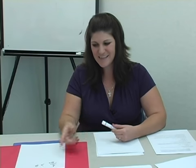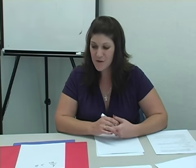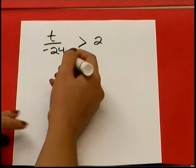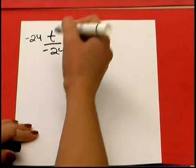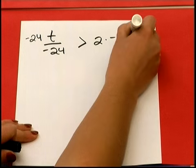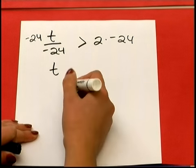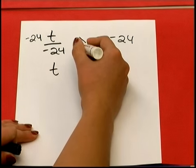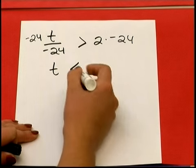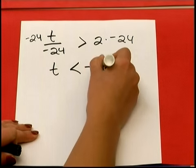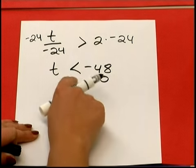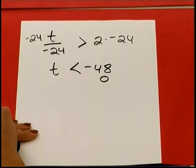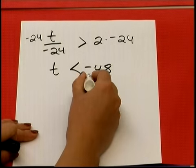Now to solve a division inequality: T divided by negative 24 is greater than 2. To solve, I use the inverse operation — instead of dividing by negative 24, I multiply by negative 24 on both sides. I'm left with T. Watch — it's a negative integer, so remember we have to reverse the sign. In this case, T is less than negative 48. To graph this, I draw my circle — notice it's a strict less than, not equal to, so I don't shade the circle. T is all numbers less than negative 48.